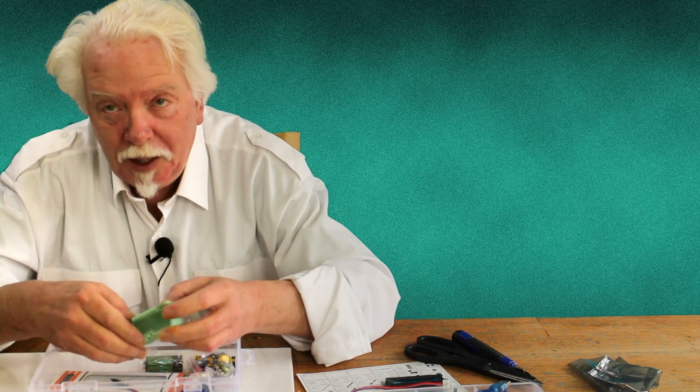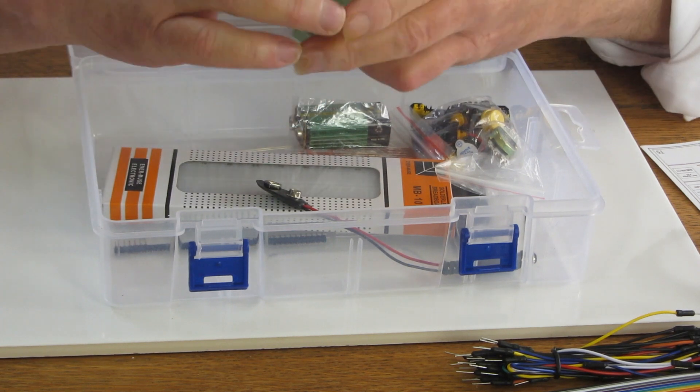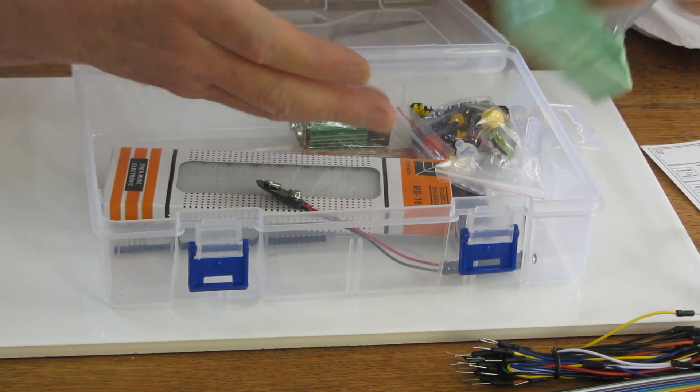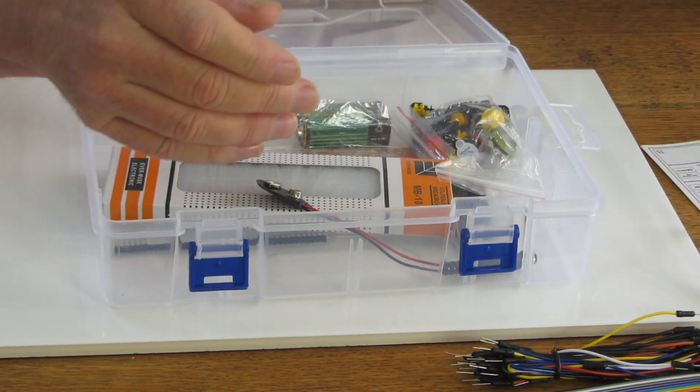This is a little green box, which doesn't do anything electronic but I think you just put your resistors and things in there so you don't lose them.